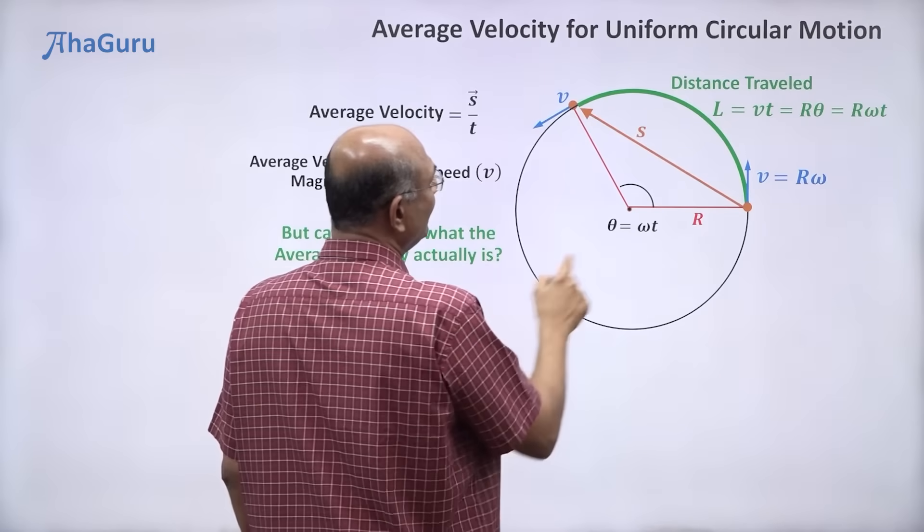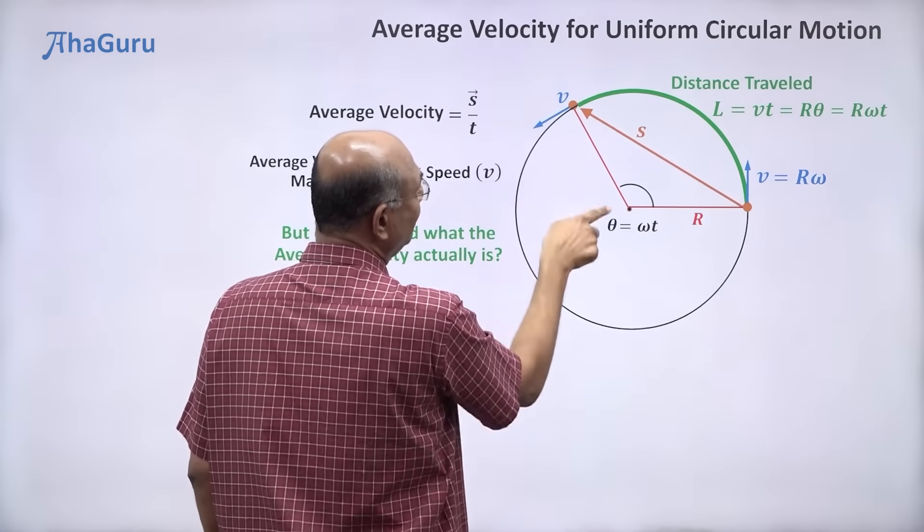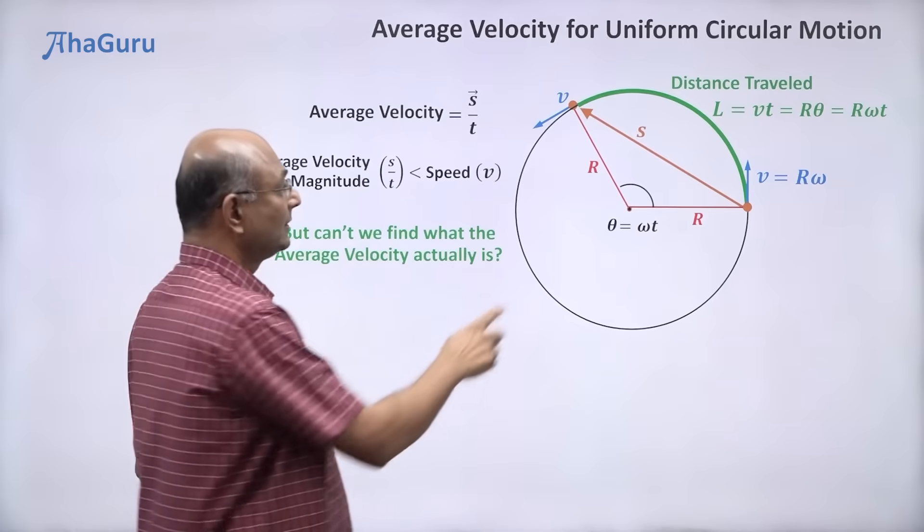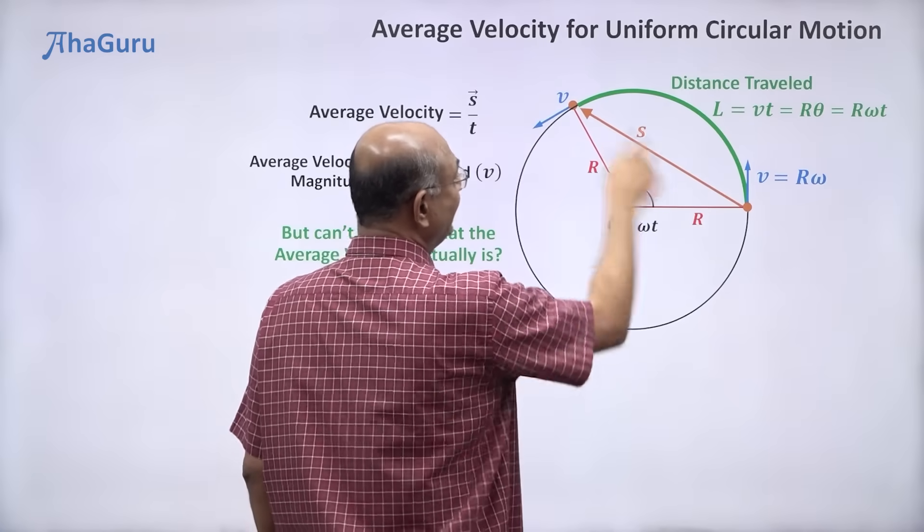Because to do that, you just have to recognize that this is an isosceles triangle. Why? Because this is also r. This is r, this is r. So this is an isosceles triangle.